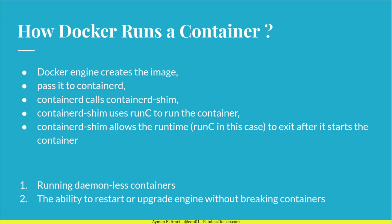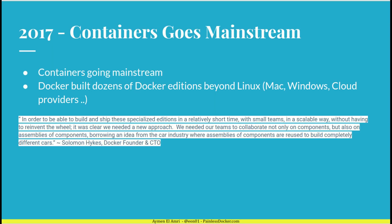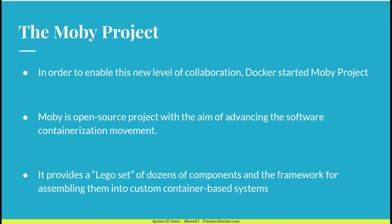2017 was the year during which containers went mainstream. That's why Docker was building several Docker editions beyond Linux: Docker for Mac, Docker for Windows, Docker for AWS, GCP, etc. With this container mass adoption, Docker Inc. realized that new production models were needed, and that's why it started the Moby project. The Moby project was started to enable a new level of collaboration and production; it's an open source project with the aim of advancing the software containerization movement.